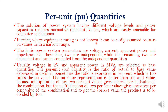Where equipment ratings are not known, they can be easily assumed because per-unit values lie in a narrow range. The basic power system parameters are voltage, current, apparent power, and impedance. Voltage and current are independent quantities, while apparent power and impedance are dependent quantities, calculated from voltage and current. Of these four, two are independent while the remaining two are dependent and can be computed from the independent quantities. Usually, voltage in kV and apparent power in MVA are selected as the base quantities.